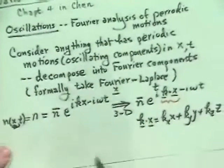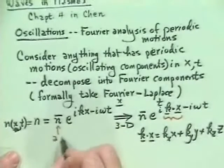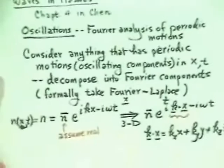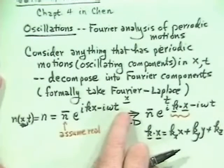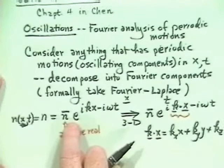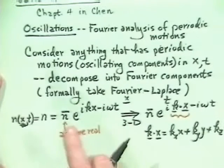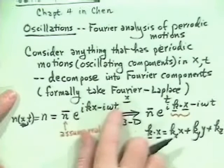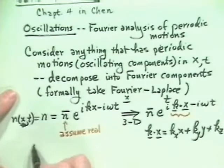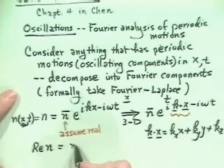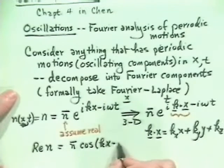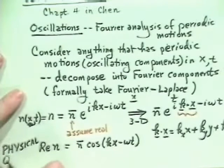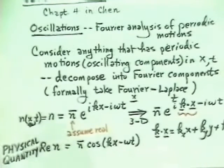The implicit assumption is that n̄ is real. When we write n(x,t) as a constant times e^(ik·x - iωt), we're really only interested in physical quantities that cannot be imaginary — electric fields, density, and so forth can't be imaginary. So the implicit presumption is that only the real part of n matters, which is just n̄·cos(kx - ωt). That is the physical quantity.